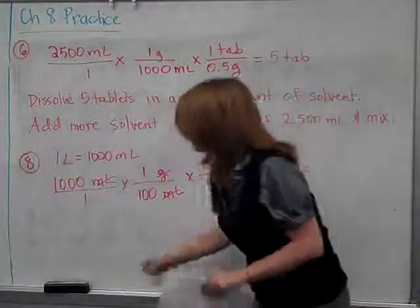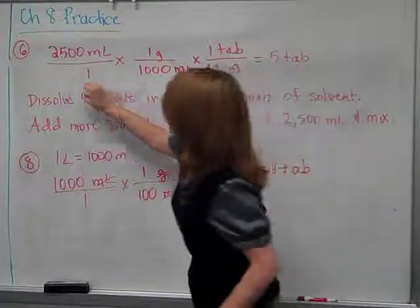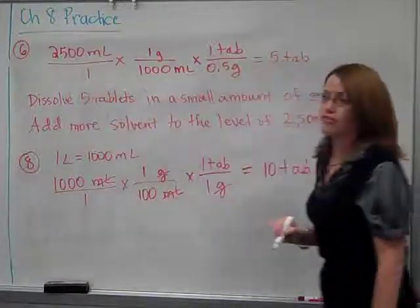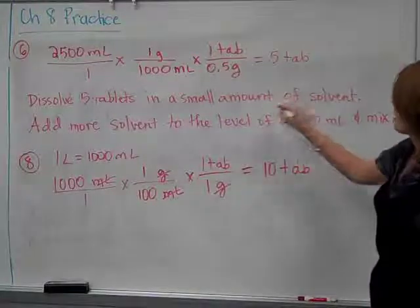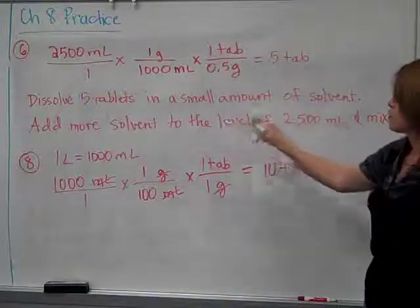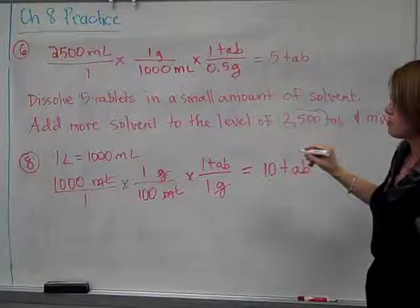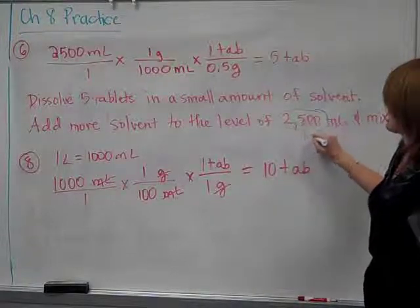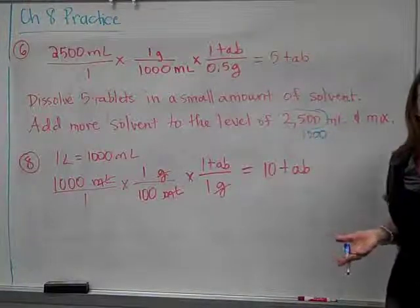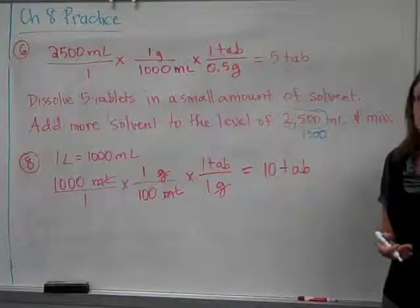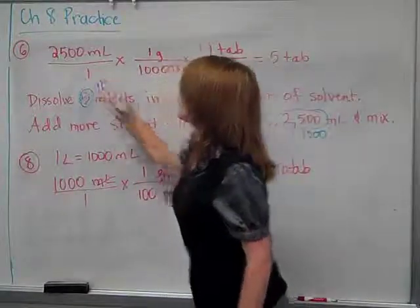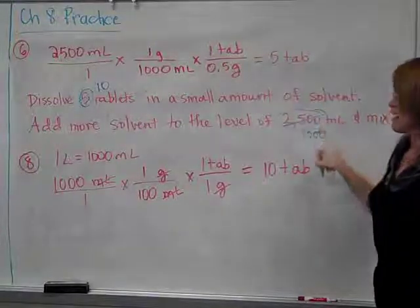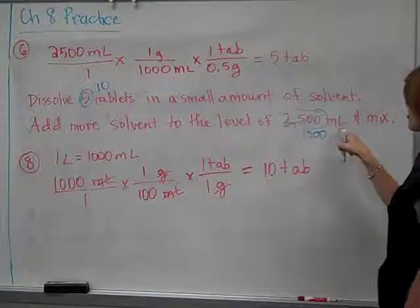But to change your answer, you would say dissolve 10 tablets instead of five on the previous sentence, and a small amount of solvent, add more solvent to the level of 1,000 milliliters, or you could write one liter. That's kind of your choice. It doesn't really matter. But this will turn into 10, and this will turn into 1,000.